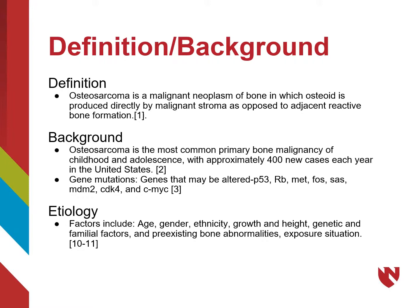Osteosarcoma is a malignant neoplasm of bone in which osteoid is produced directly by a malignant stroma, as opposed to adjacent reactive bone formation. Osteosarcoma is the most common primary bone malignancy of childhood and adolescence, with approximately 400 new cases a year in the US.